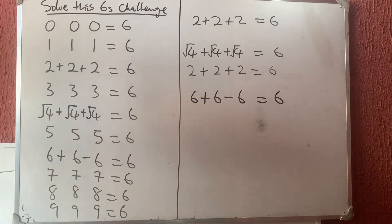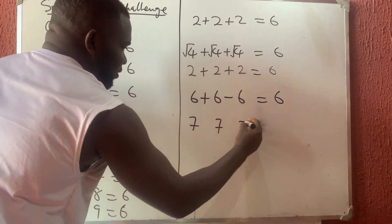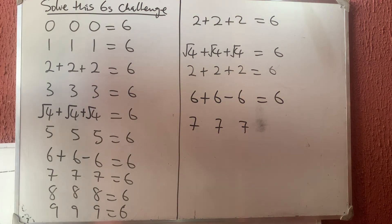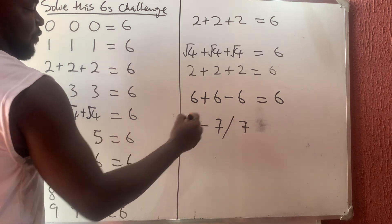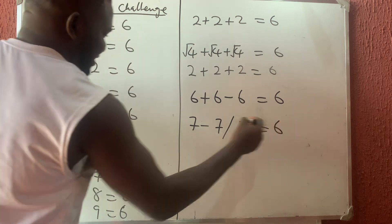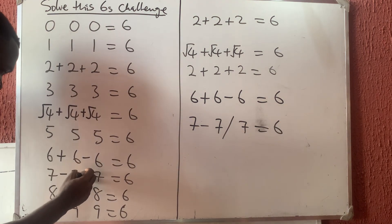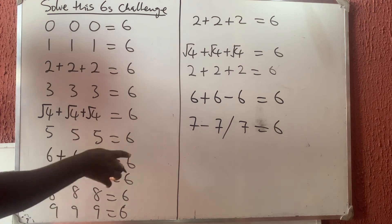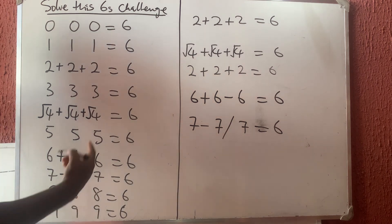What about seven? I have seven, seven, seven. Seven divided by seven is one, and seven minus one gives us six. So here I'm using division and subtraction: seven minus seven divided by seven equals six.